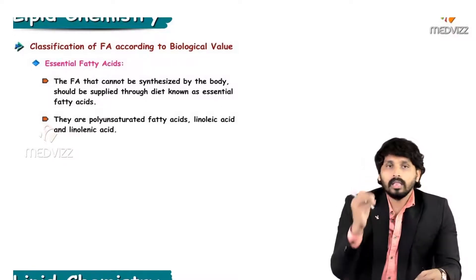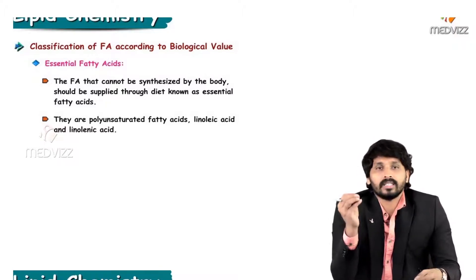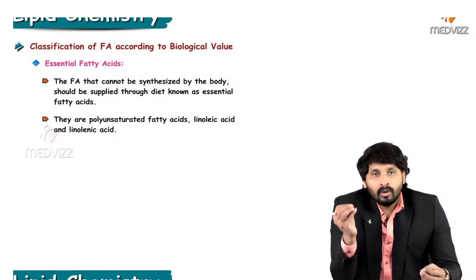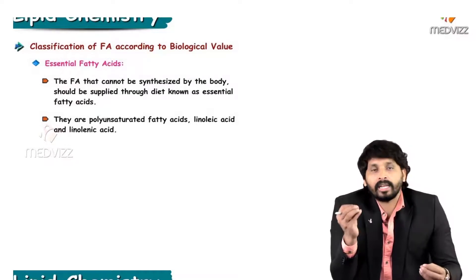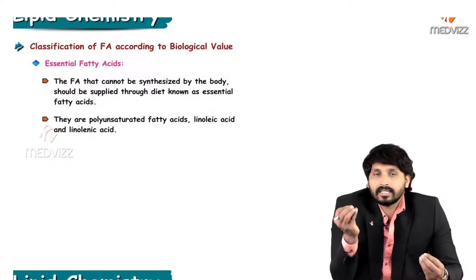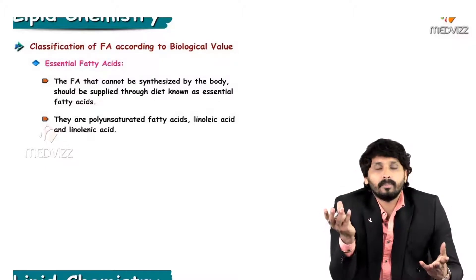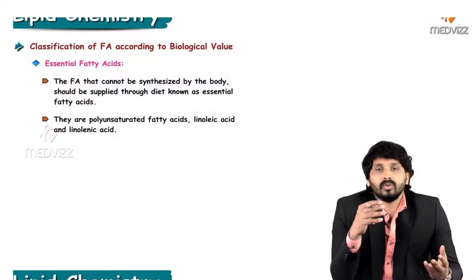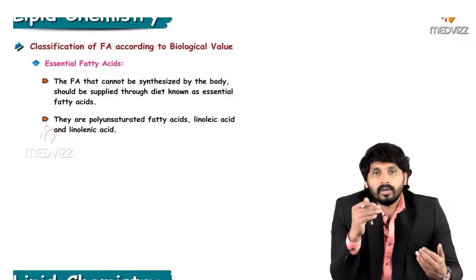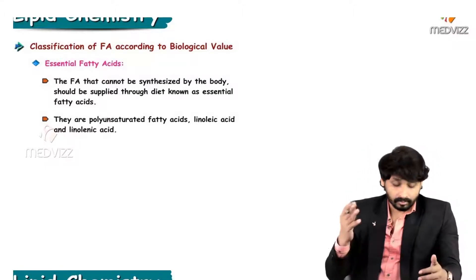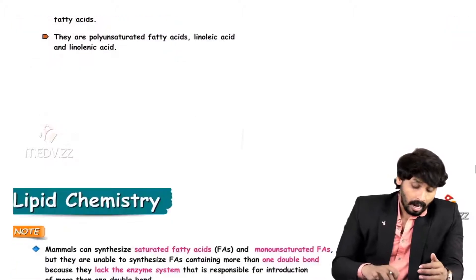All the polyunsaturated fatty acids are essential fatty acids. Examples include linoleic and linolenic acid. Arachidonic acid is less essential because if you have linoleic acid, you are going to make arachidonic acid from it. So compared to linoleic and linolenic, arachidonic acid is less essential.